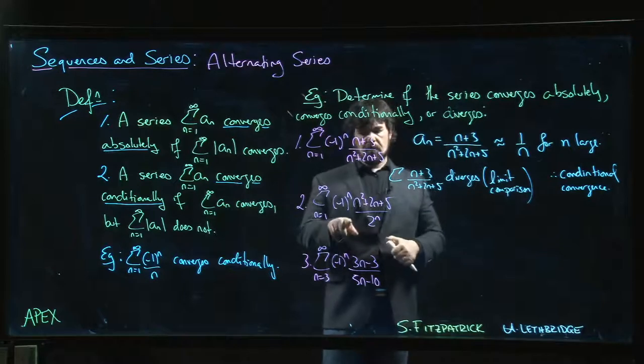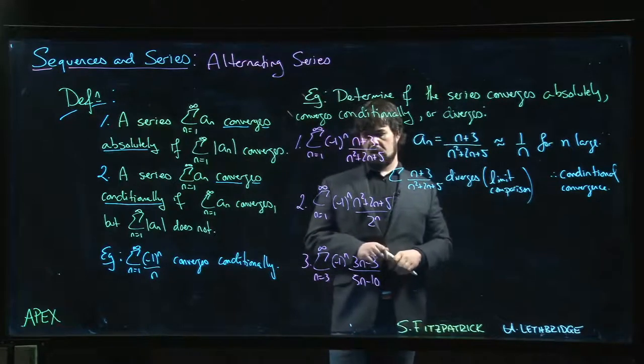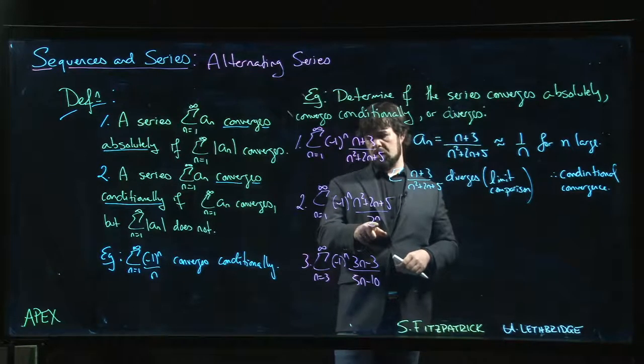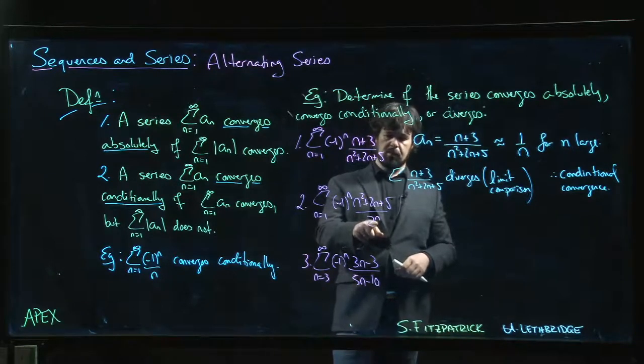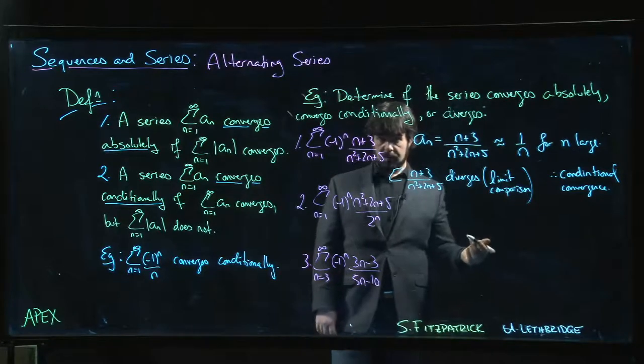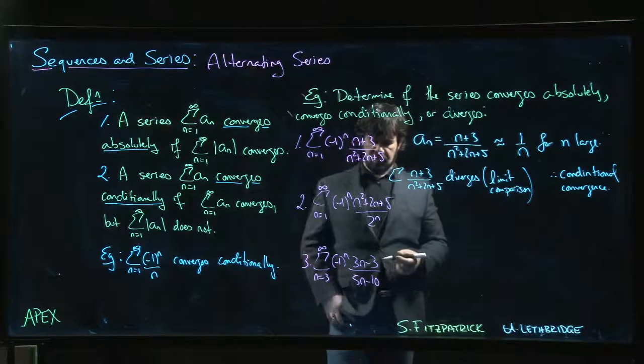Moving on to this one, well here we've got that exponential on the bottom. We expect that's probably going to win out over a polynomial on the top, so we might suspect absolute convergence in this case.